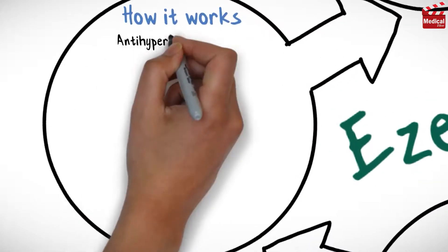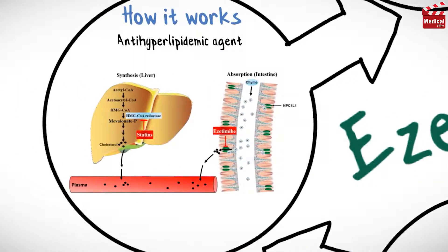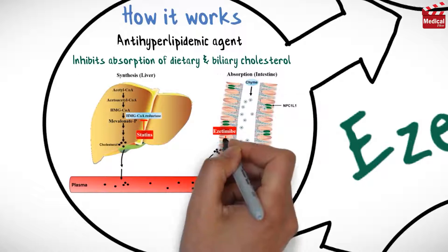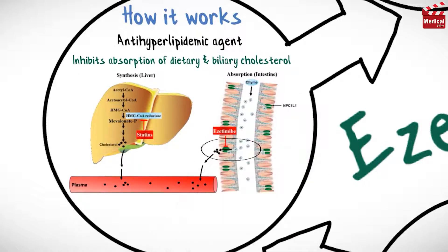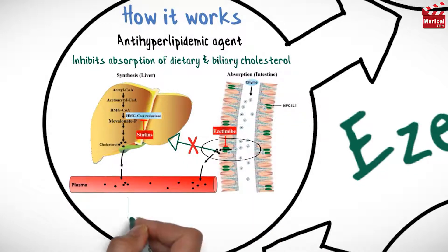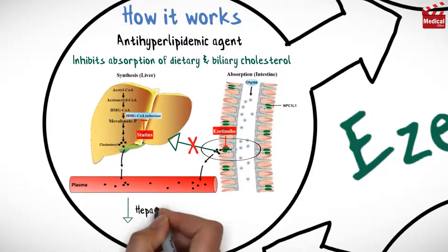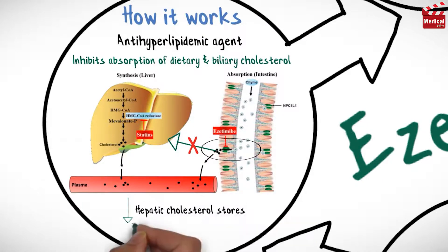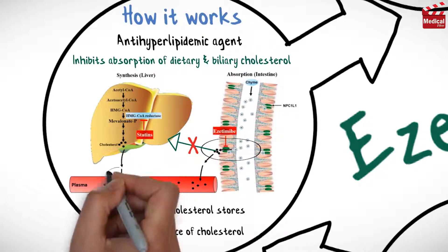Ezetimibe is an anti-hyperlipidemic agent. It selectively inhibits absorption of dietary and biliary cholesterol in the small intestine, leading to a decrease in the delivery of intestinal cholesterol to the liver. This causes a reduction of hepatic cholesterol stores and an increase in clearance of cholesterol from the blood.